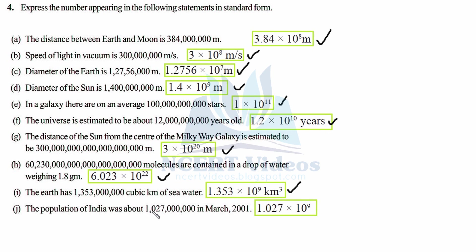Last part: the population of India was about a certain number in March 2001. Significant digit is 1.027. Count all digits: 9 plus 1 is 10, and 10 minus 1 is 9. So the population is 1.027 × 10⁹. For identifying significant digits: whenever you see numbers in continuity other than 0 that is the significant part — like 1027 here, or 1353 earlier — because after those we have continued zeros. With practice you will get it faster. That is the last question, question number 4.